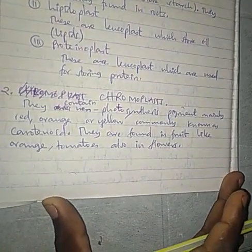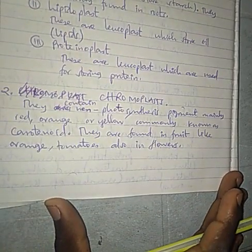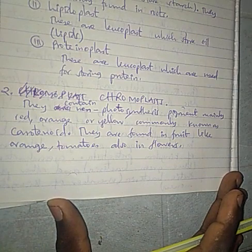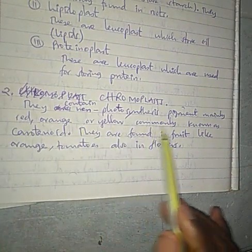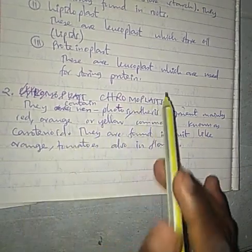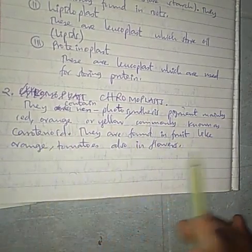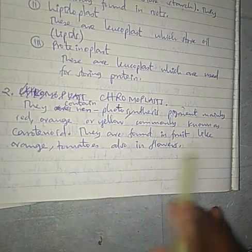Now let's jump to Chromoplasts. Chromoplasts contain photosynthetic pigments, mainly red, orange, or yellow, known as carotenoids. They are found in fruits like oranges and tomatoes, and also in flowers.